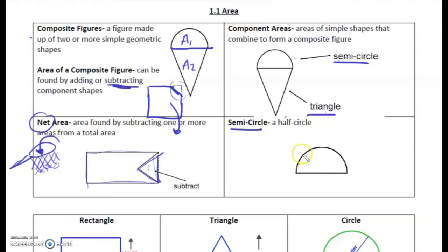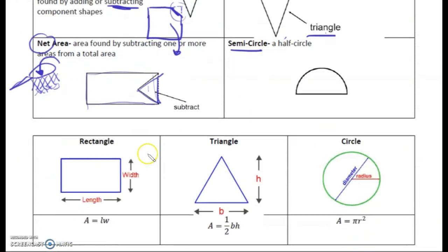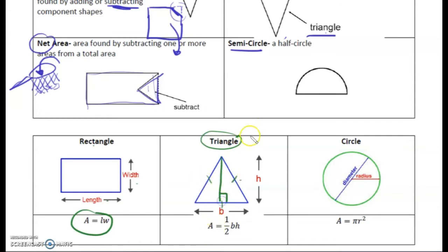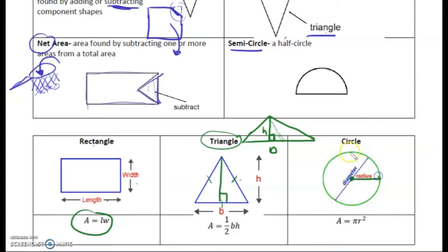A semicircle is a half circle. We're going to focus on three shapes: rectangle, with area = length × width; triangle, with area = ½ × base × height — and the base and height of a triangle must meet at 90 degrees, even for wonky shapes where the height may not be in the middle; and circle, with area = π r², where r is the radius from the center to any point on the circle, and the diameter is two times the radius.